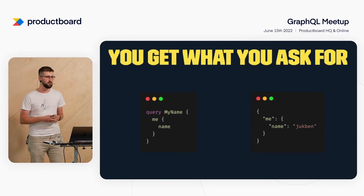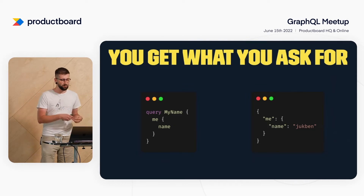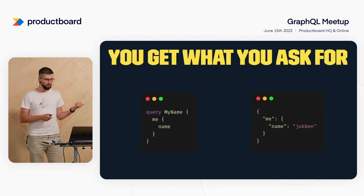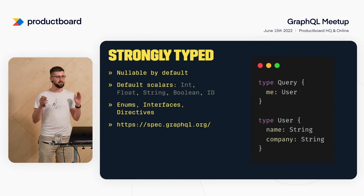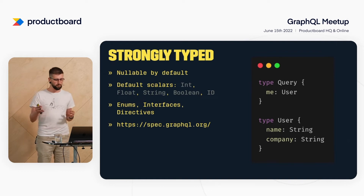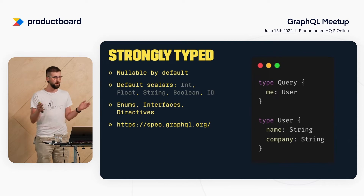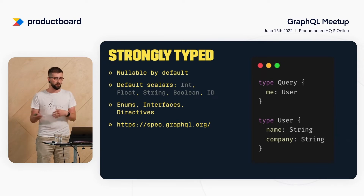Probably this is the association you have when I'm talking about GraphQL — GraphQL is all about getting what you ask for. In the schema definition I showed, there's a very minimal example: you can query 'me', which returns a user, and the user has 'name' and 'company', both nullable strings. That's basically the information clients can use — they know what they can do with the server.